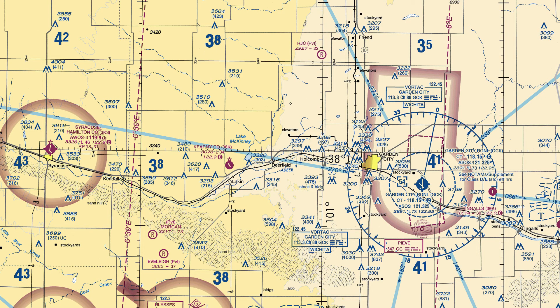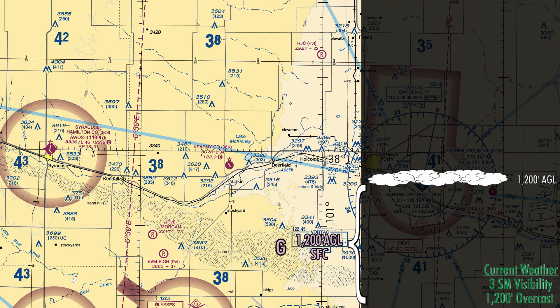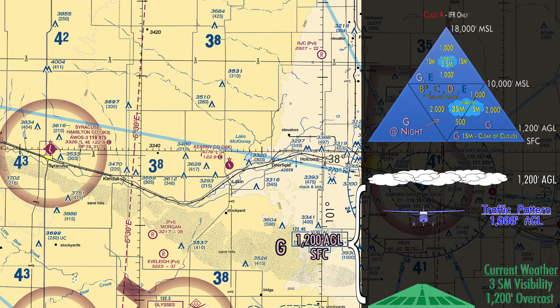So how can we apply this in real life? Let's look at a couple of chart examples. First, we'll look at Kearney County Airport. From the chart, you should be able to tell that it's Class Golf airspace from the surface up to 1,200 feet, and then Class Echo above 1,200 feet AGL. Let's say the current weather report is three statute miles visibility and overcast at 1,200 feet AGL. If you were to practice takeoffs and landings in the traffic pattern at 1,000 feet AGL, you'd be in Class Golf airspace, needing one statute mile visibility and staying clear of clouds. The clouds are at 1,200 feet, your pattern is at 1,000 feet — you can stay clear of clouds and you have at least one mile visibility.